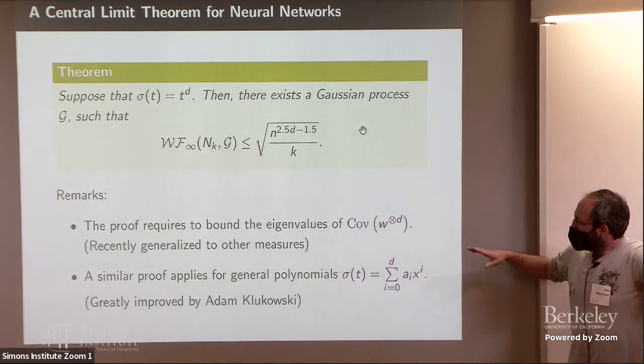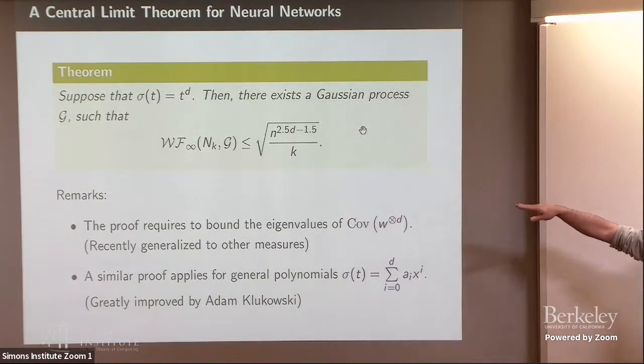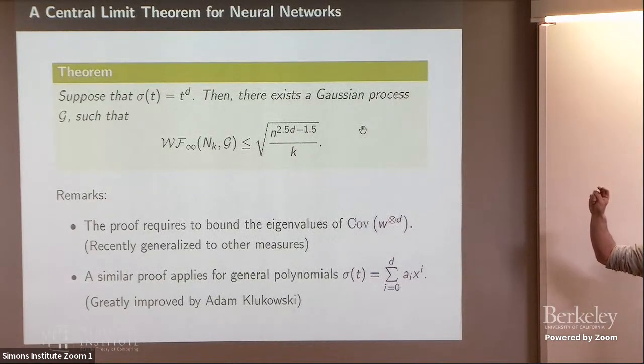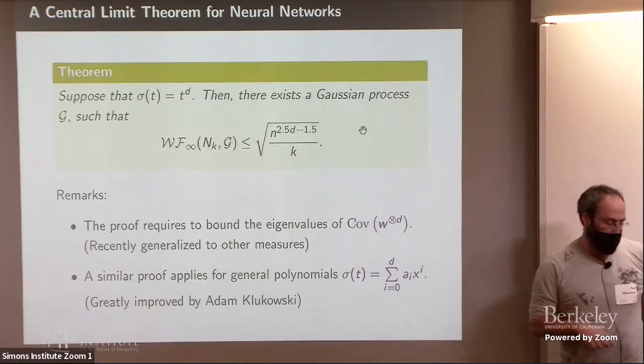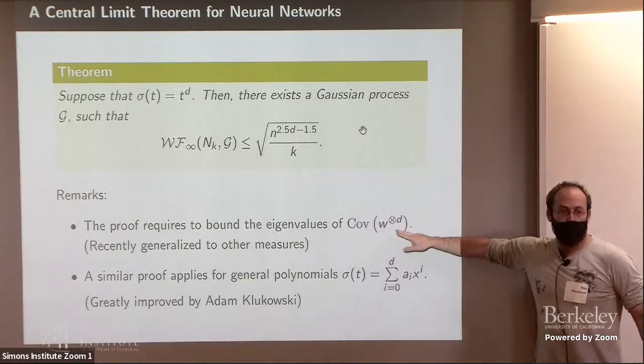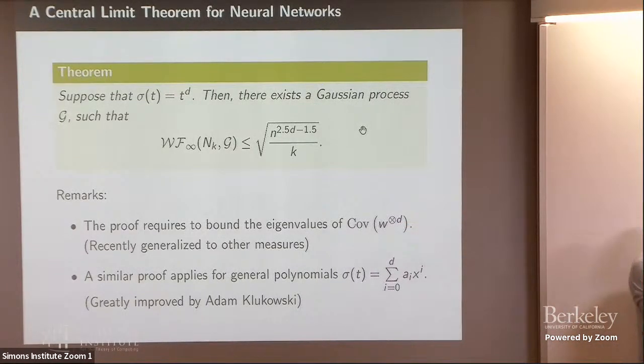And let me just end by saying that that was one way to embed the measure into a finite dimensional space, but there are other ways. You don't need to embed it into a space of monomials. So that's the idea of Adam Klukowski, who embedded those networks into a space of harmonic polynomials. And when you embed it into a space of harmonic polynomials, then you don't need to worry about the covariance structure, because everything is orthogonal. So we managed to obtain much, much better results also for non-polynomial activations. So, yeah, I think I'll stop it. Thank you.